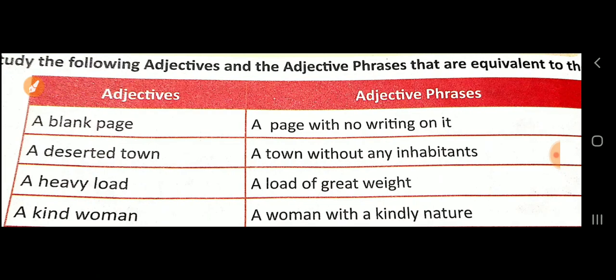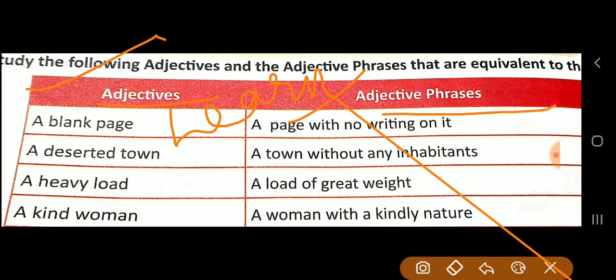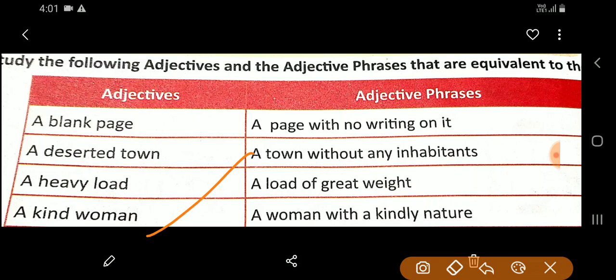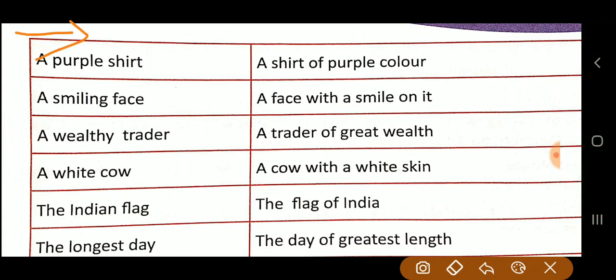Here there is a small exercise — not to write but to learn. Adjectives and their corresponding adjective phrases are listed. For example: 'a blank page' — 'a page with no writing.' Go through this whole list, read and learn. This is your homework.